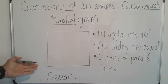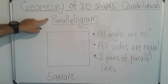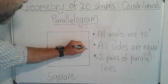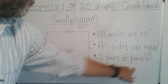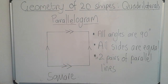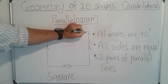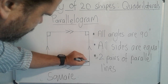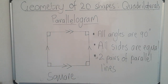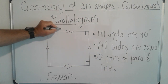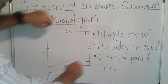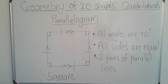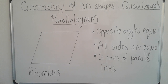A shape you all know is a square, and a square is also a type of parallelogram because it has two pairs of parallel lines. What makes it a little different is that all its angles are 90 degrees — the small square in the corner tells you it's a 90-degree angle. Another unique feature of a square is that all four sides are equal.